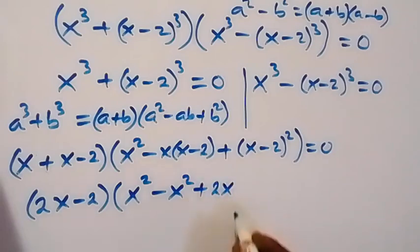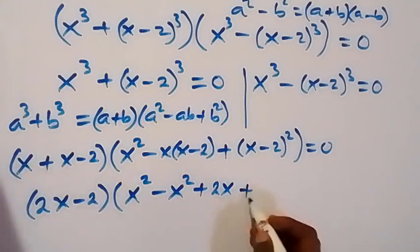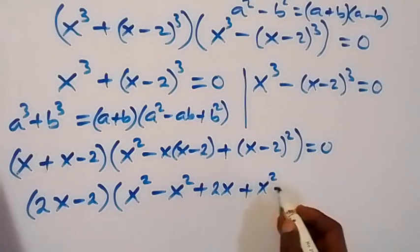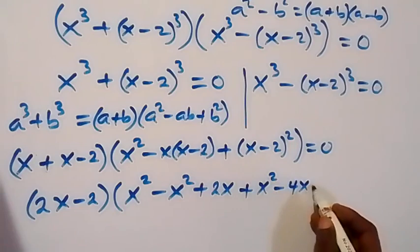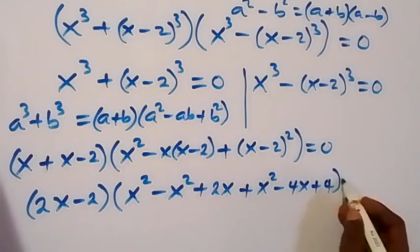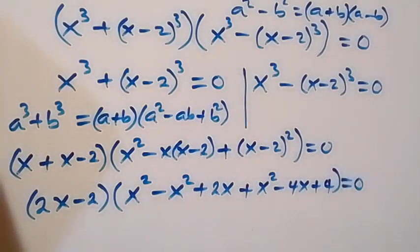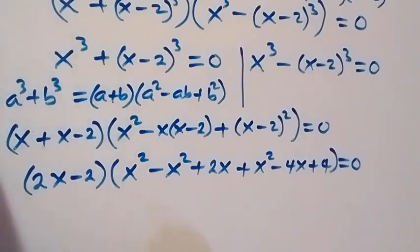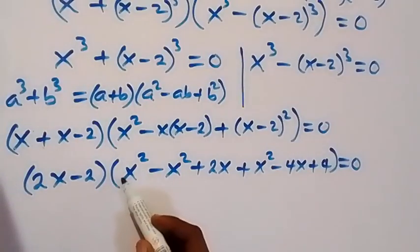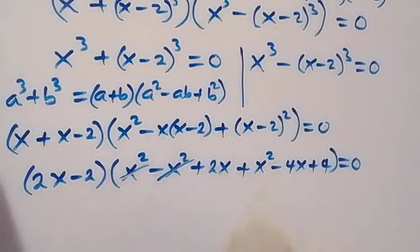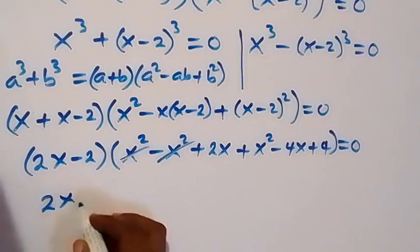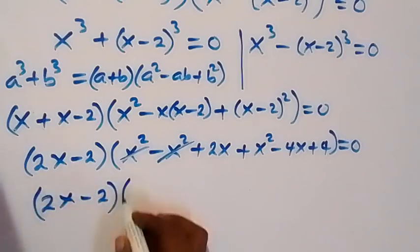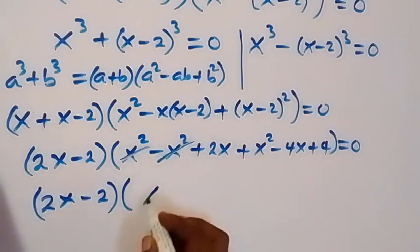Expanding (x minus 2) squared gives x squared minus 4x plus 4, equals 0. Inside the bracket we can simplify: the x squared terms cancel each other, leaving 2x minus 2 times the bracket containing the quadratic.